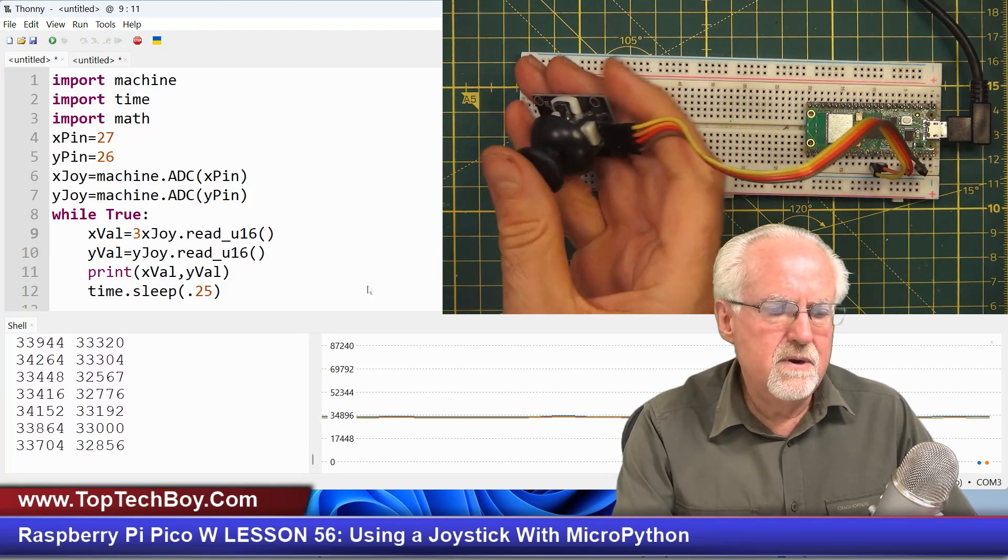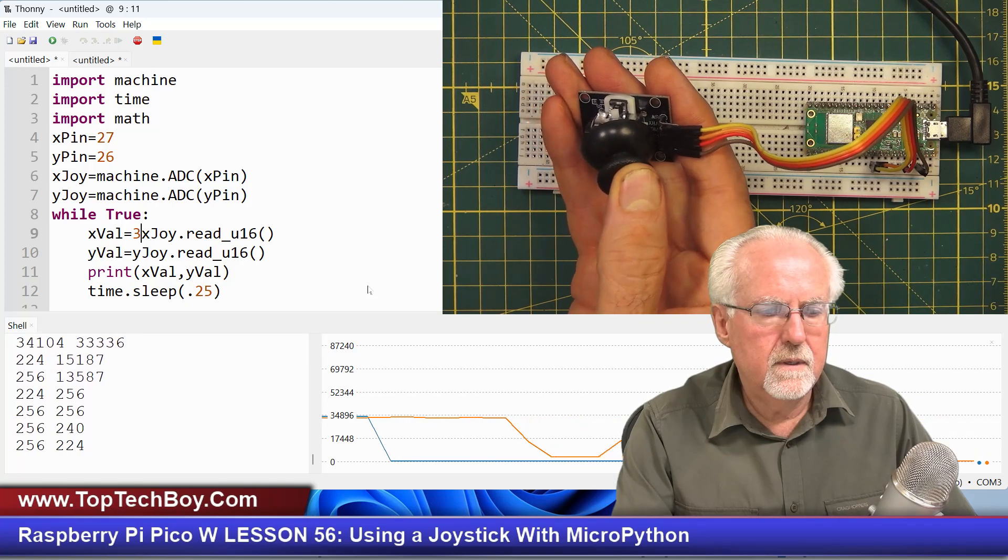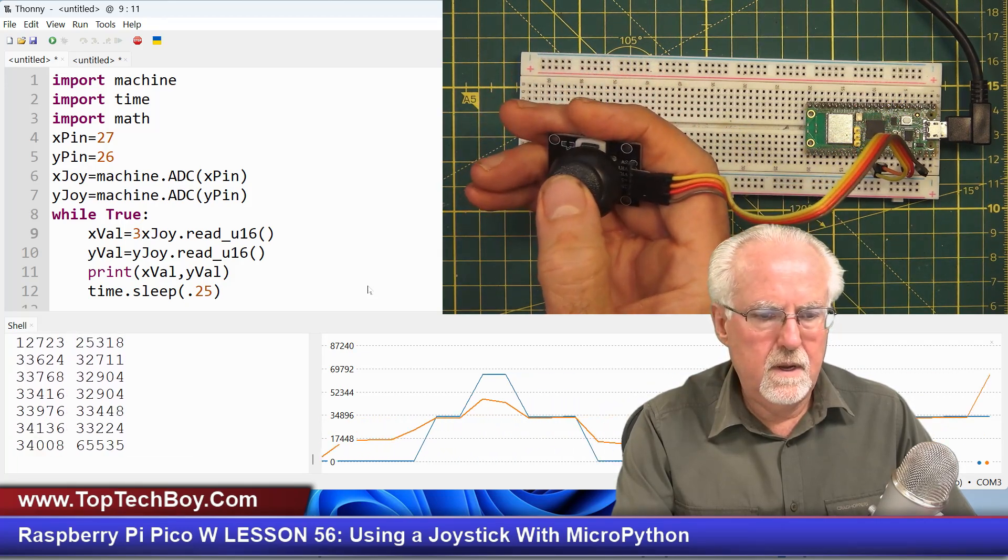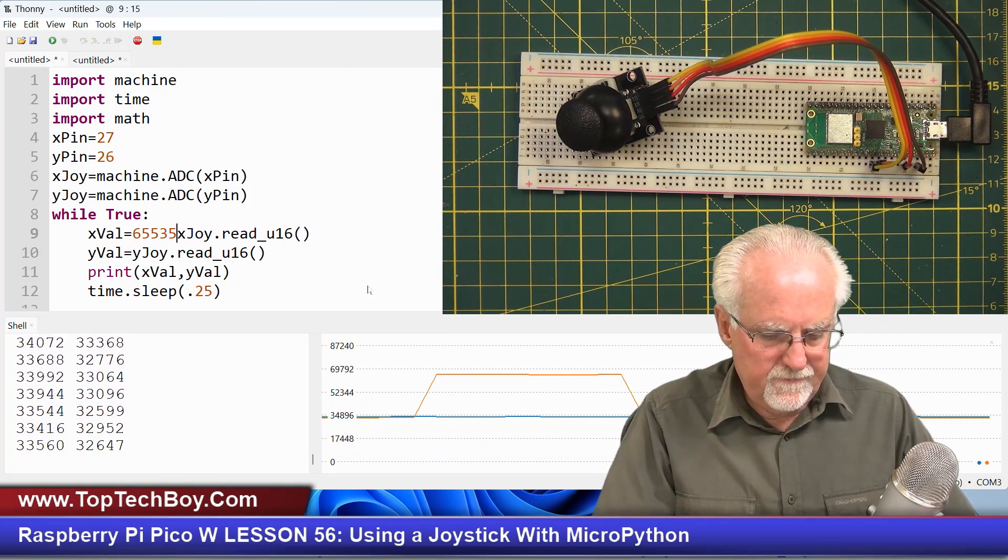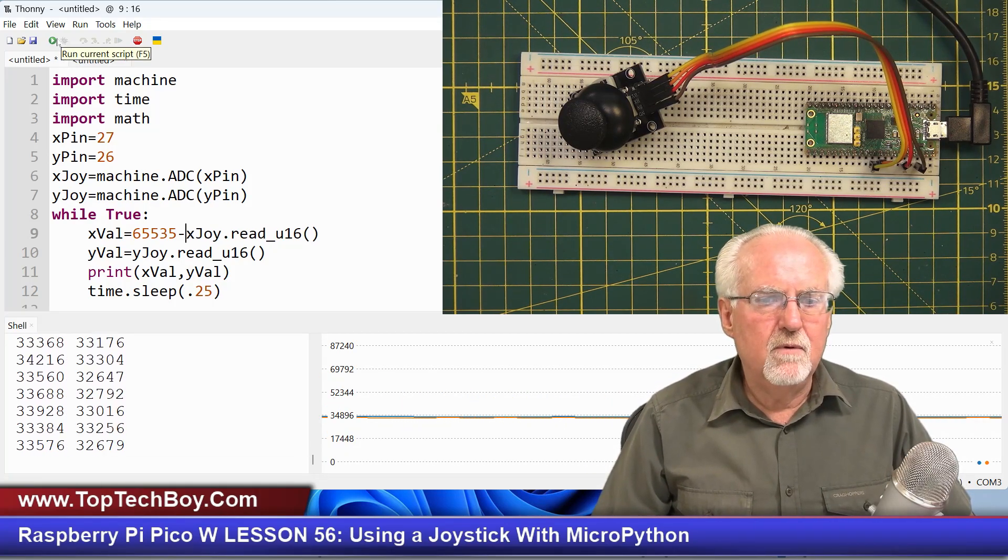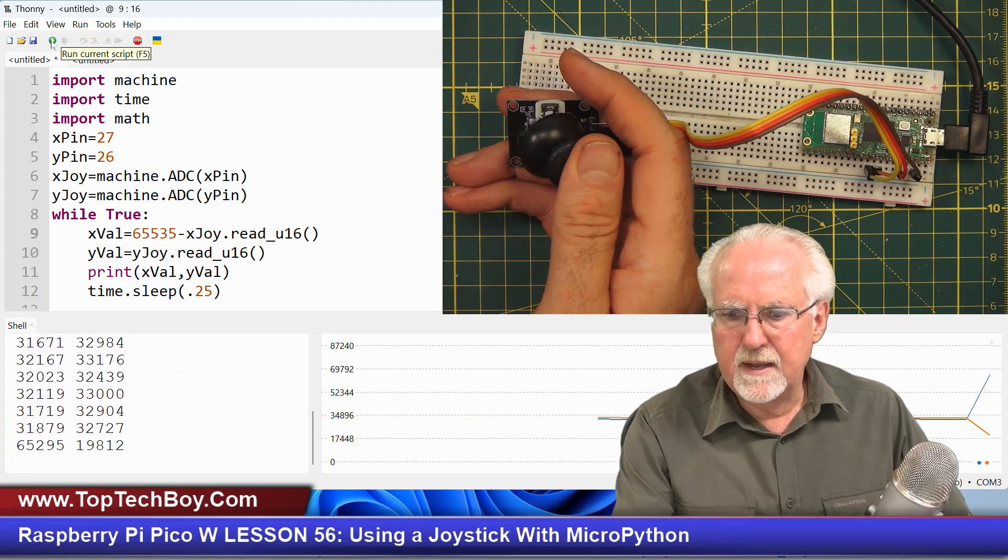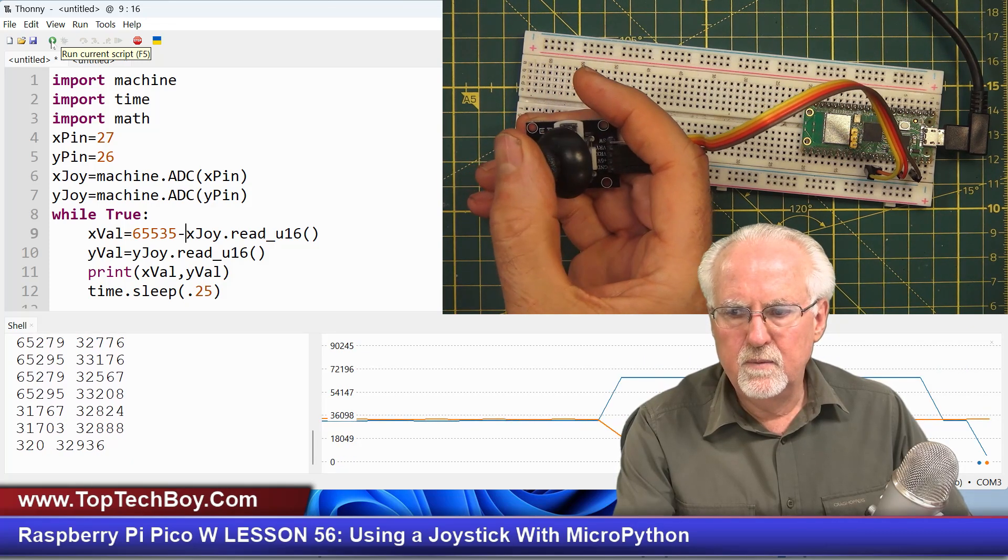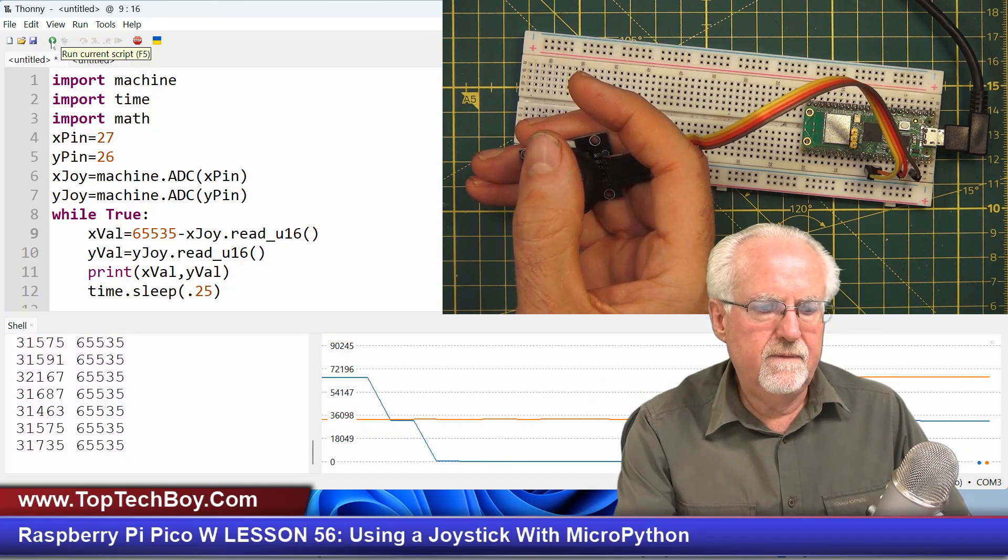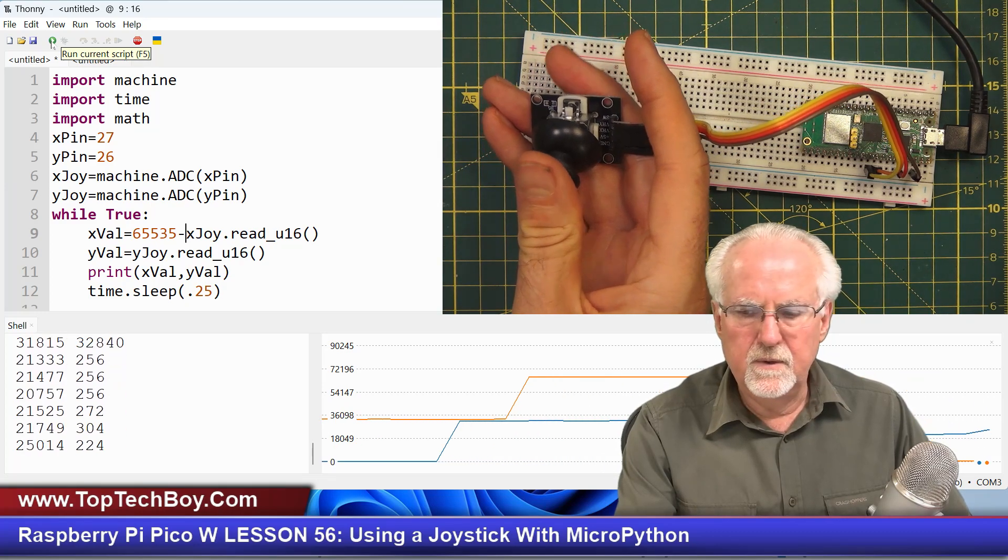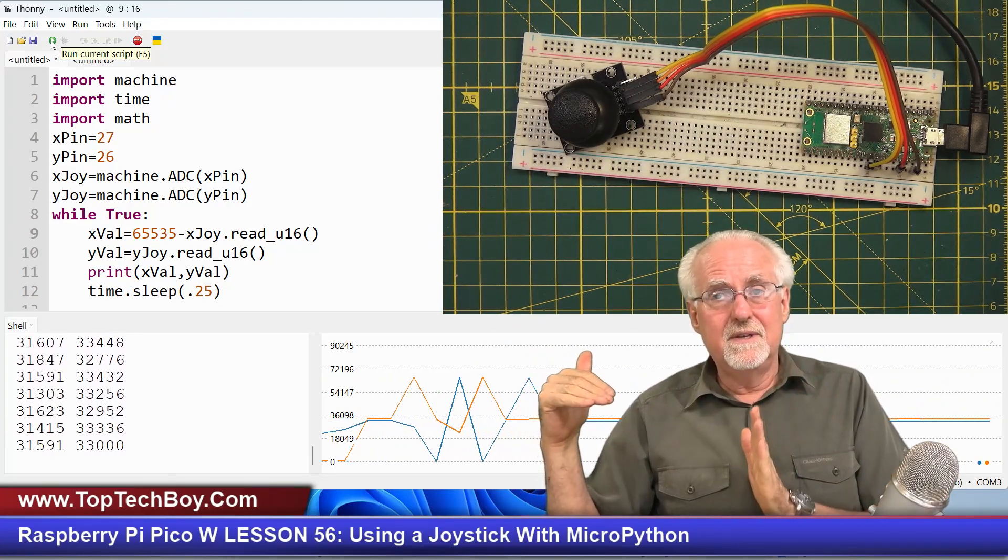Oh, it's up here. Okay, 65, 535. So it's going to be 65, 535 minus the reading. And I'm hoping that that will make things go the right way now. So let's take a look now. Okay, so they're both in the middle. And when I go to the right, X goes up. Okay, that's good. And when I go to the left, X goes down to zero. That looks good. Up, it goes up to 65, 535. Down, it goes almost to zero. And so you see now this thing is behaving where positive X gets bigger as you go positive and positive Y gets bigger when you go positive. So the things are kind of oriented more mathematically. Now, why did I want to do that?